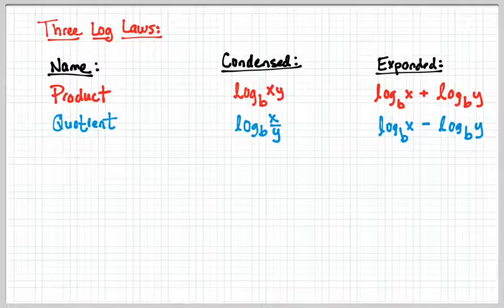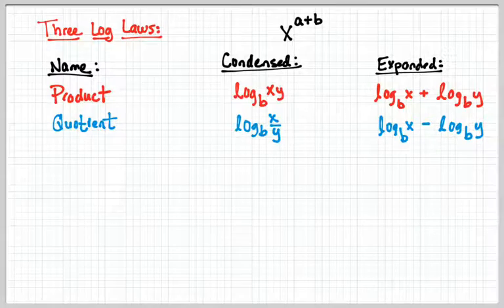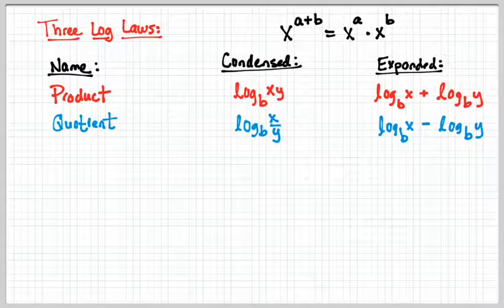If we stop here and look at this, there is no coincidence that this is operating like it is. What rules does this look like it's following? Exponents. And why would it follow exponent rules? They are inverses. x^(a+b) = x^a × x^b, remember doing this? It's the exact same thing as the product property.